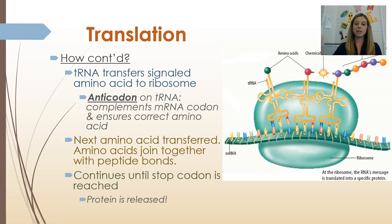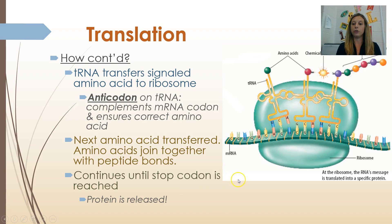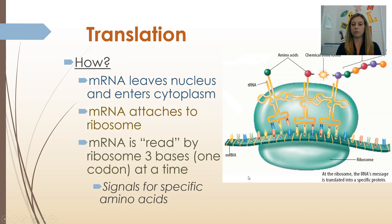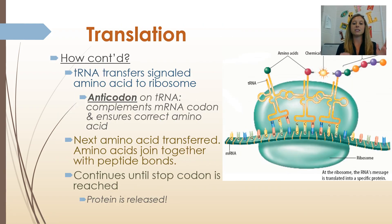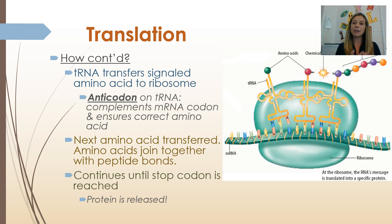This continues to happen — the next amino acid is transferred, and the next, and the next. The amino acids join together with peptide bonds. This happens until a stop codon is reached. Remember that codon chart — there are certain codons that are stop codons, and that signals that the protein has been built. A protein is also called a polypeptide chain — poly meaning many, peptide referencing the peptide bonds between amino acids. Many amino acids join together to form a polypeptide chain or a protein. Once the stop codon is reached, we've built our protein, and the protein gets released wherever it goes in the cell.